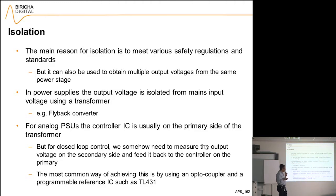For analog power supplies, the controller IC usually is placed on the primary side of the transformer, and the transformer is providing isolation. But we need to somehow take a measurement of the output voltage and feed it back into the primary side in order to get closed loop control.